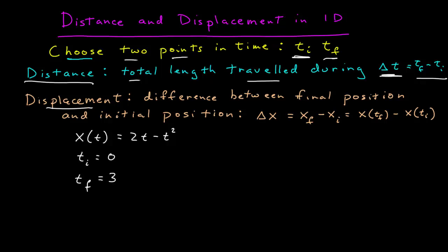Where the displacement is the difference between the final position and the initial position. So I call that difference delta x, which is the final position x subscript f, minus the initial position x subscript i. But these terms are defined to be the function evaluated at the final time minus the function evaluated at the initial time.